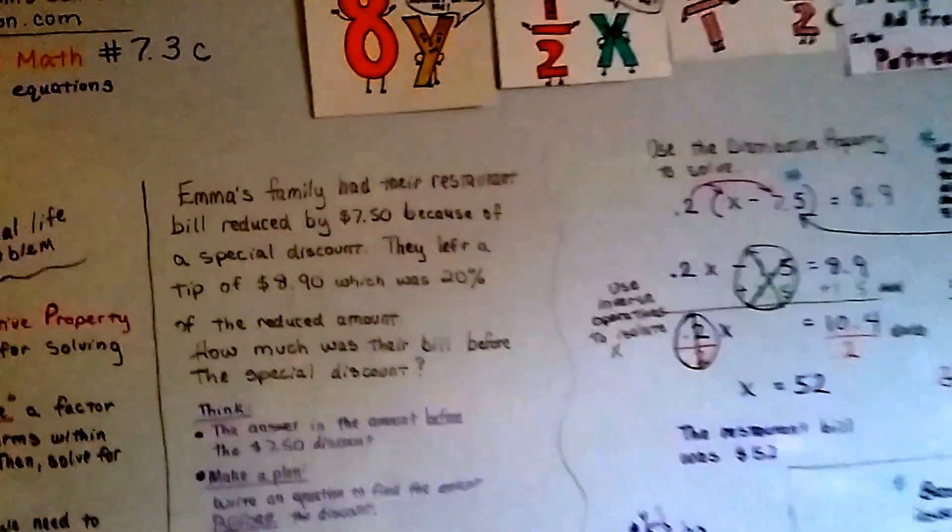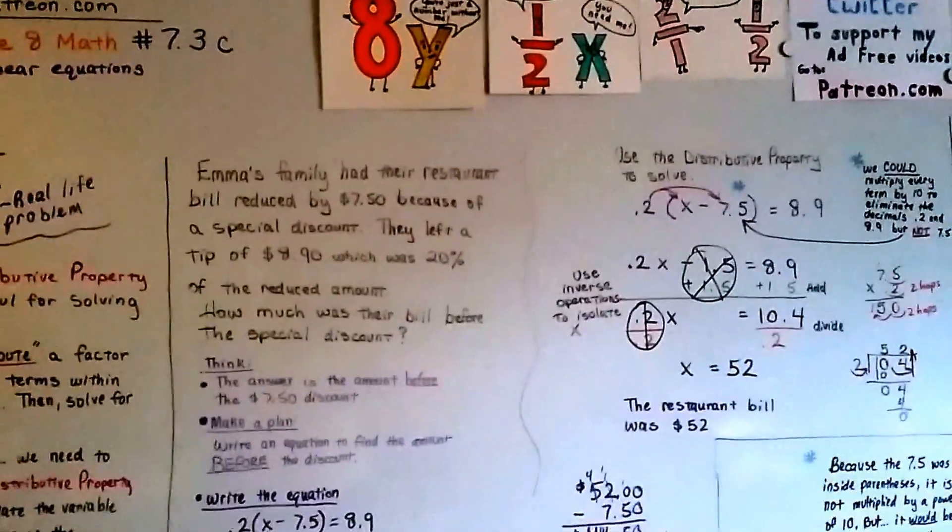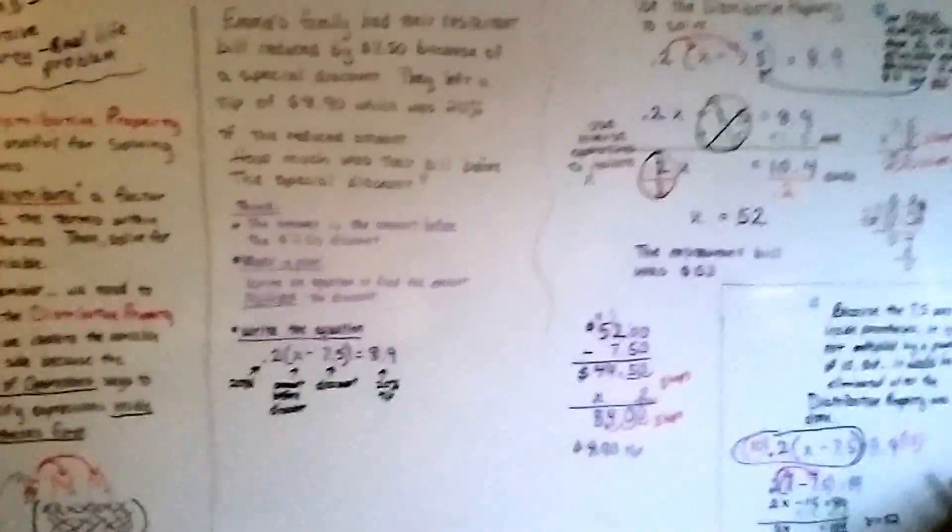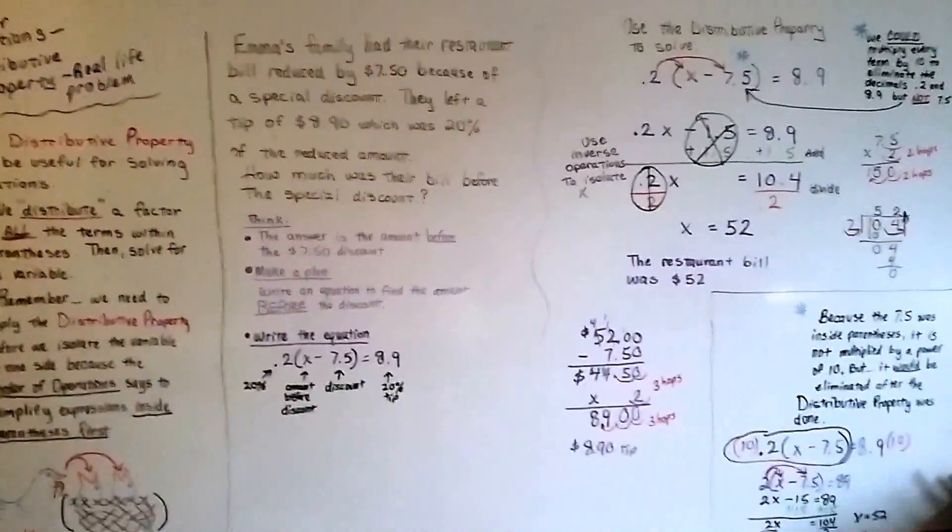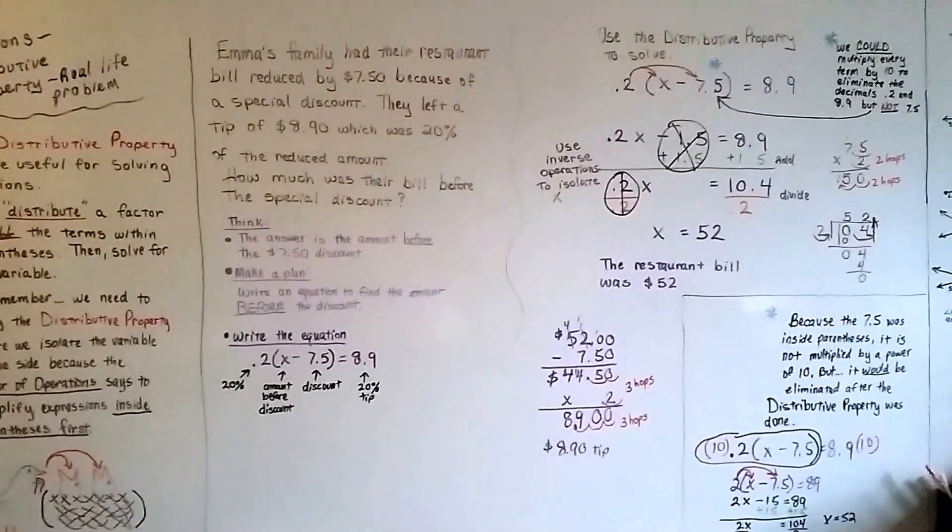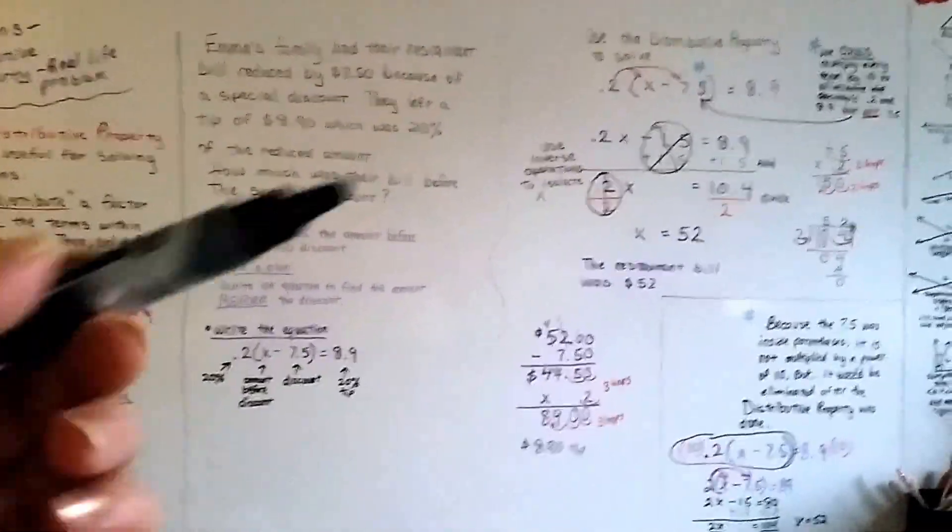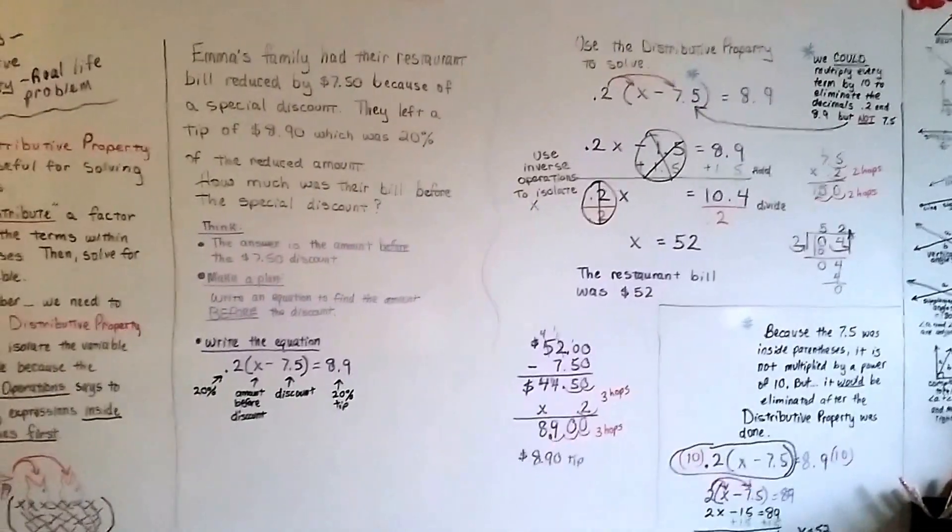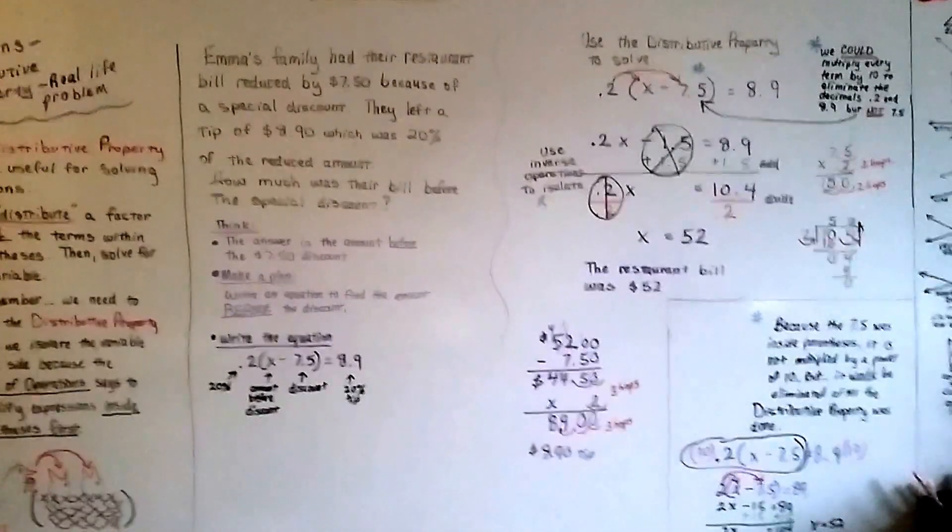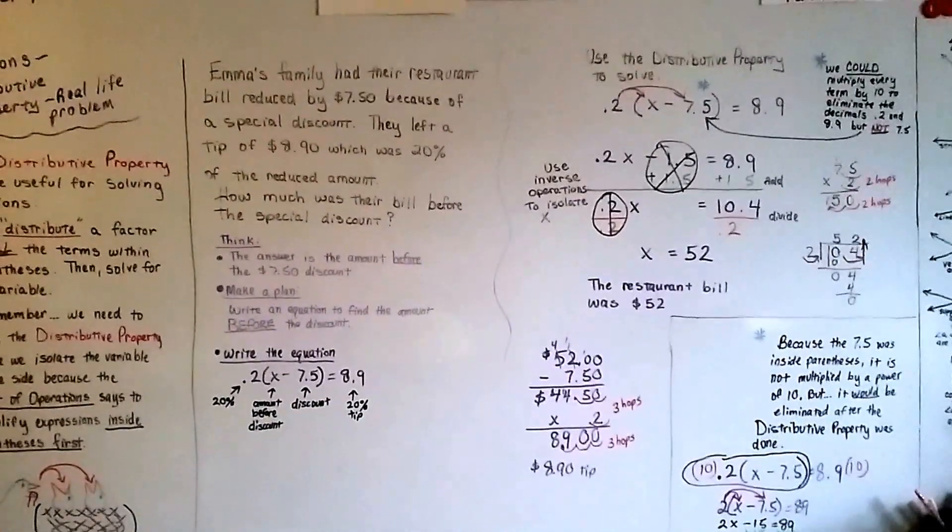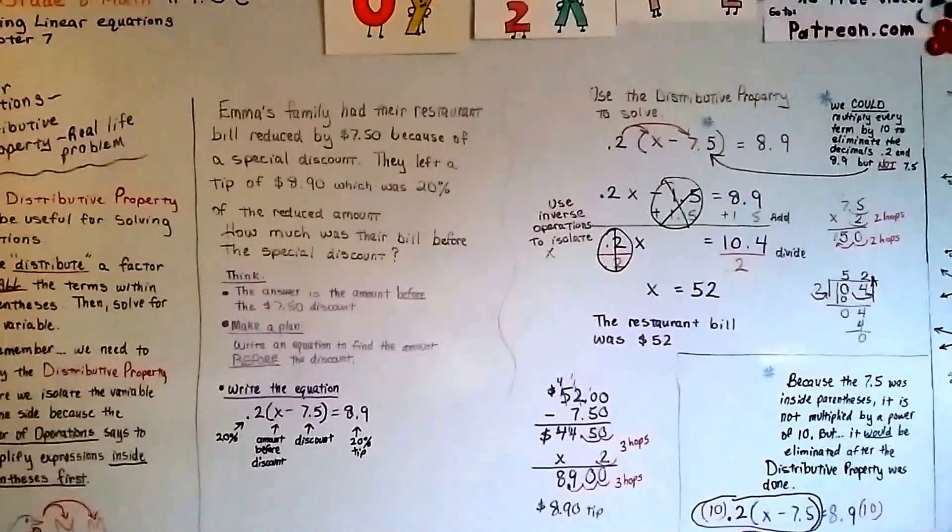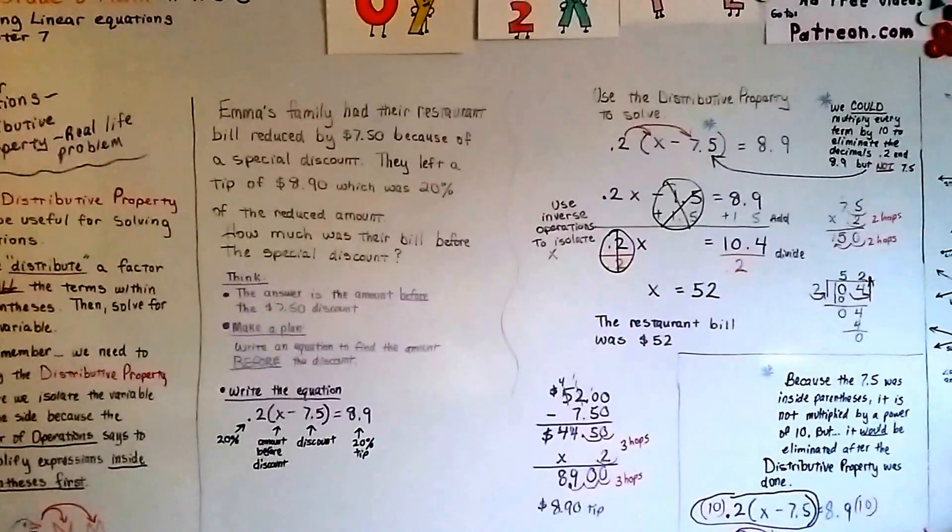So that, I almost tripped over a dog again. That is using the distributive property in a real life problem. And now you saw how we used the decimals in this linear equation. And we didn't eliminate it with a power of 10. We just solved it because you could do that. It doesn't have to be multiplied by a power of 10. We just do that to make it easier on ourselves if we want to. We're going to continue on and I'm going to talk about a mixture solution of acid in the next video. That's going to be 7.3D. I'll see you there. Bye.